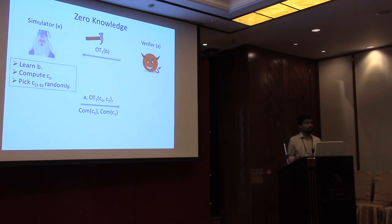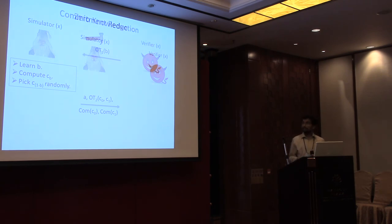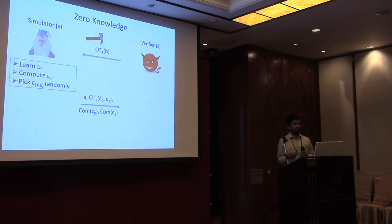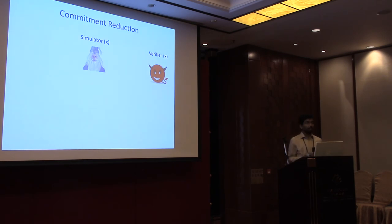Our goal is to show that the verifier's view is indistinguishable from the ideal world view. At some point in the security proof, going through a series of hybrids, we have a reduction to the commitment scheme. In the real world, C_{1-b} was not picked randomly, whereas in the ideal world it is uniformly random. We need the commitment to hide what C_{1-b} is, so at some point in the proof we rely on the hiding property of this commitment.